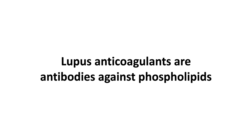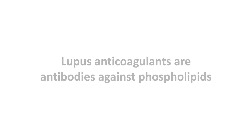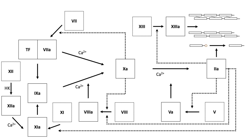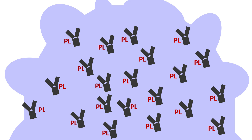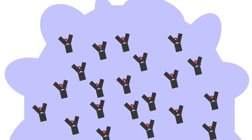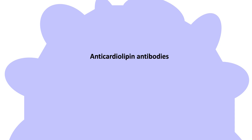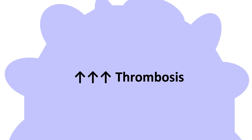Lupus anticoagulants are antibodies that act against phospholipids. Recall our concept map of the coagulation cascade. Key coagulation steps occur in the presence of phospholipids, which come from the platelet, and the platelet is covered in phospholipids. For unclear reasons, certain antiphospholipid antibodies develop that recognize and bind the phospholipids and clear them from the circulation. Examples of these antibodies include anticardiolipid and anti-beta-2-glycoprotein-1 antibodies. These antibodies impair the balance of anticoagulants and procoagulants, leading to increased thrombosis risk.